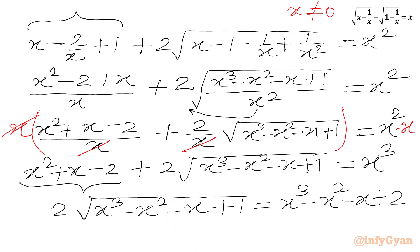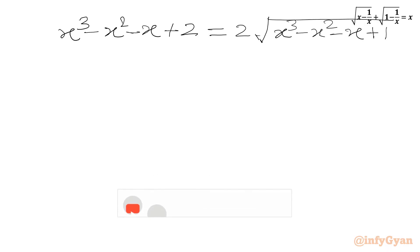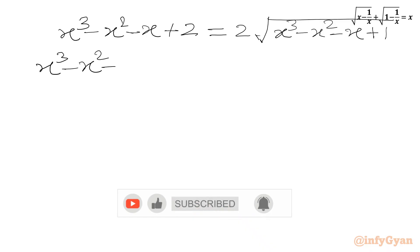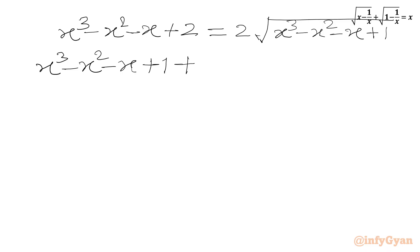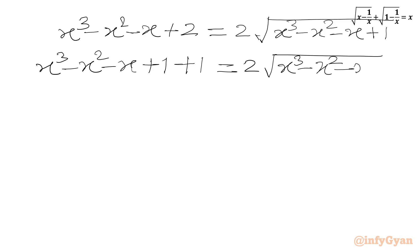Now we are going to subtract these three terms from both sides. So we get: 2 times square root of (x³ − x² − x + 1) equal to x³ − x² − x + 2. Now we are going to use substitution. Can we write our LHS as (x³ − x² − x + 1) + 1? Yes, 2 can be written as 1 plus 1. So: 2 times square root of (x³ − x² − x + 1).